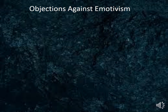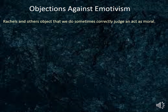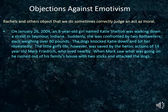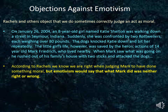But there are objections to emotivism. We noted that emotivism avoids the problem of always being right about moral claims by interpreting moral claims as speech acts which are neither true nor false — which cannot be right or wrong. But Rachels and others object that we do sometimes correctly judge an act to be moral. On January 26, 2004, an 8-year-old girl named Katie Shelton was walking down the street in Seymour, Indiana, when she was confronted by two Rottweilers, each weighing over 80 pounds. The dogs knocked Katie down and bit her repeatedly. Her life was saved by the heroic actions of 14-year-old Mark Friedrich, who rushed out with two sticks and attacked the dogs. According to Rachels, we know that we are right when judging Mark to have done something moral, but emotivism would have to say that what Mark did was neither right nor wrong. The argument is that if we are right about our judgment that it was moral, then emotivism must be wrong.